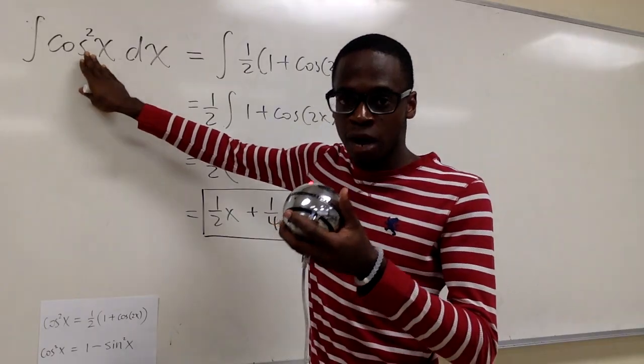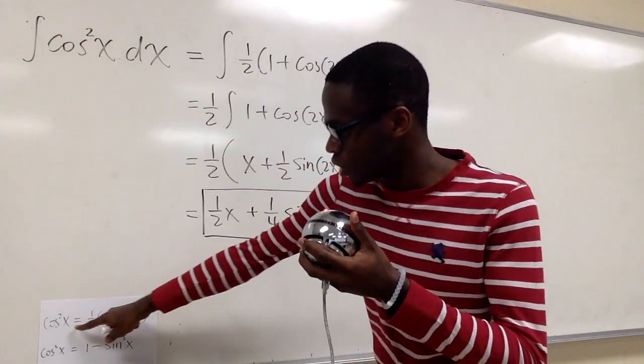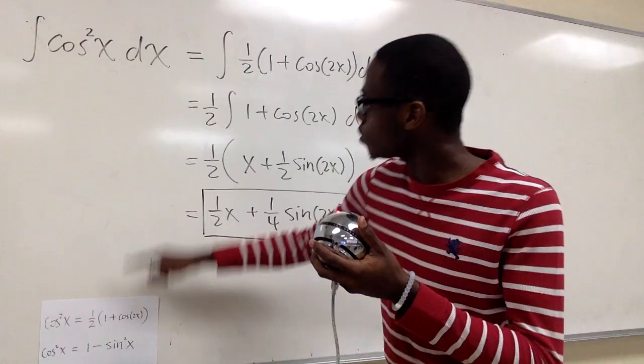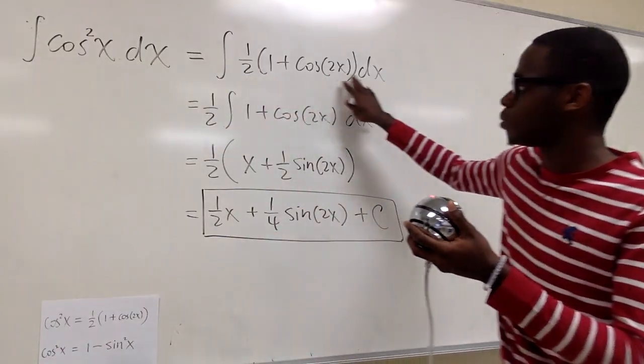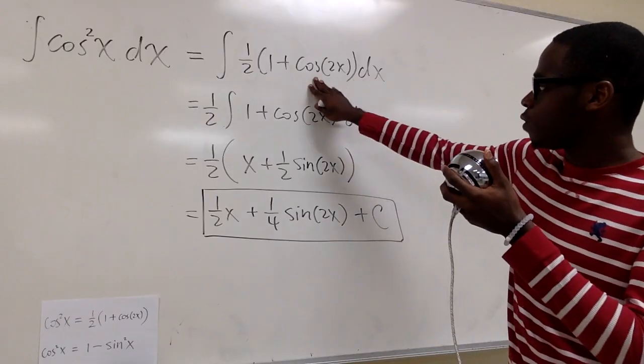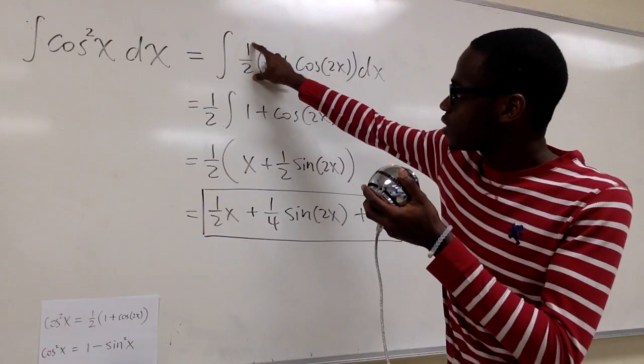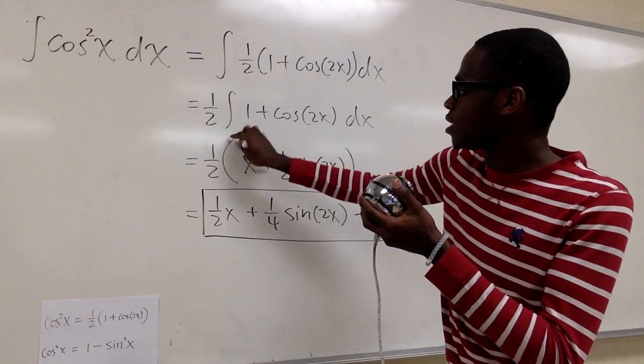So we have to use the power reduction formula which is right below here to rewrite this integral in this form. Now we have it in this form because half is a constant we could pull it out and take the integral of the rest.